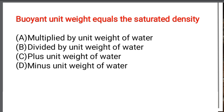Next question: Buoyant unit weight equals the saturated density — Option A: Multiplied by unit weight of water. Option B: Divided by the unit weight of water. Option C: Plus unit weight of water. Option D: Minus unit weight of water. The correct answer is Option D: Minus unit weight of water.